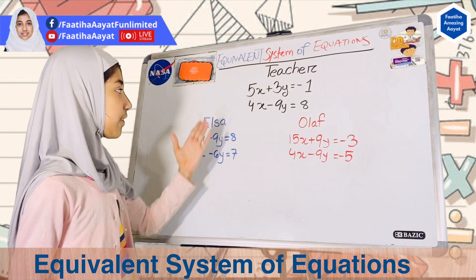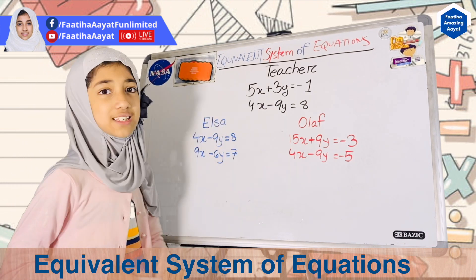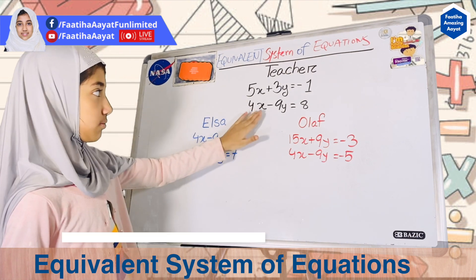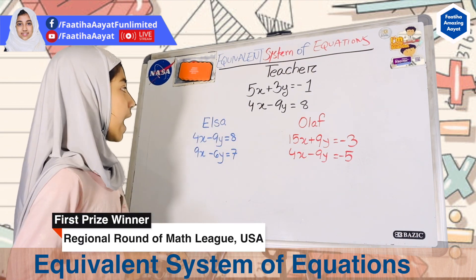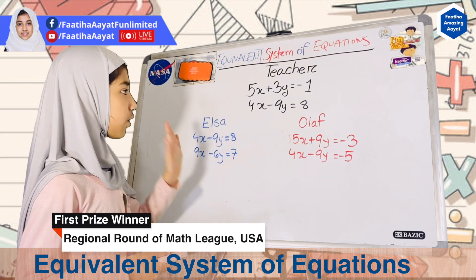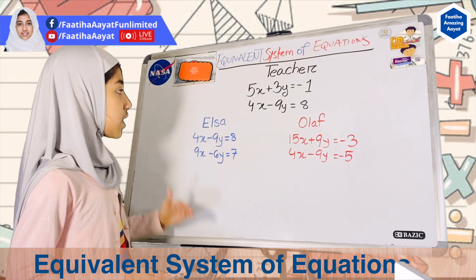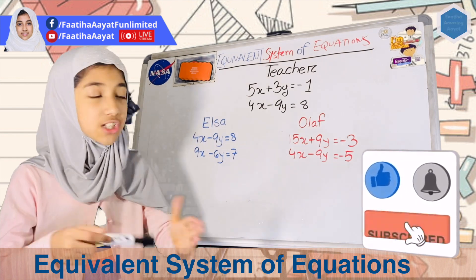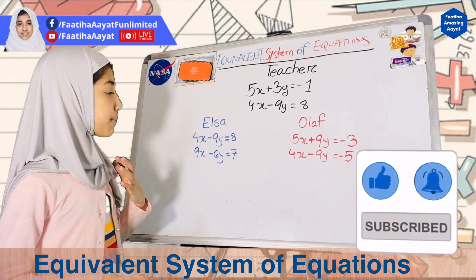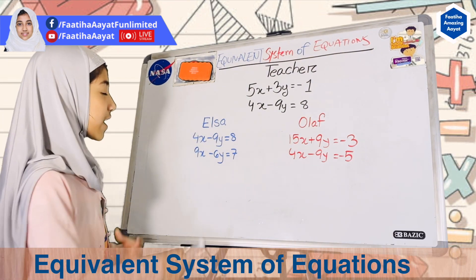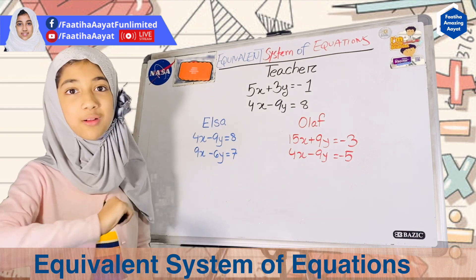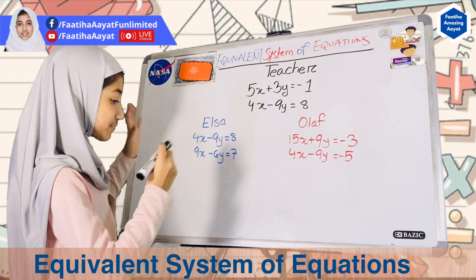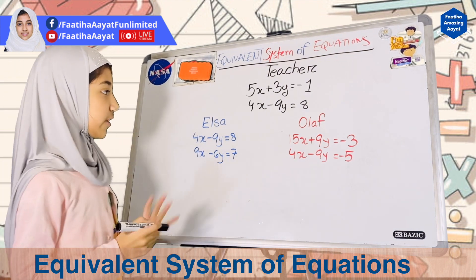The problem is that the teacher gave Elsa and Olaf a system of linear equations. These are two linear equations. Elsa and Olaf took a few steps to try to get two equations that were equivalent to the teacher's equation. We have to figure out who is correct. So we are basically the judge. Now let's figure it out.